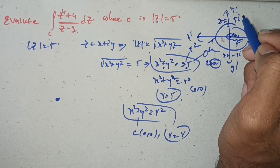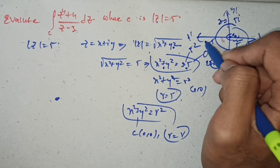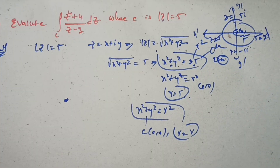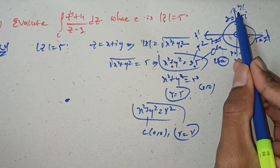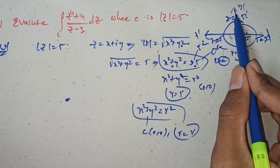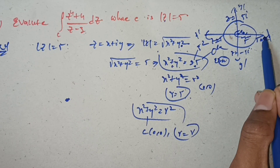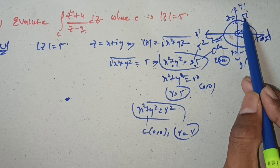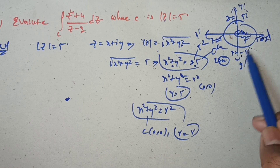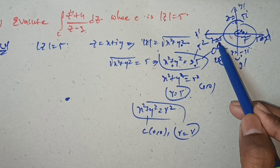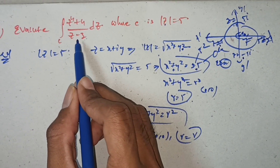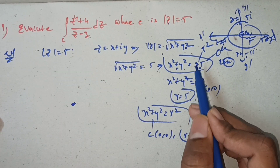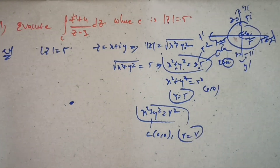So the key points on the circle are: z = 5i, z = −5i, z = 5, and z = −5. The x-axis is the real line and y-axis is the complex (imaginary) line. Now we will proceed with the evaluation.